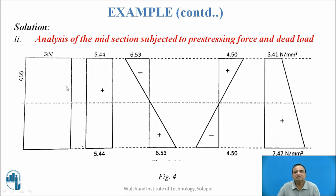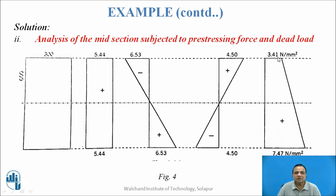The stress diagram for midsection analysis shows: the cross section with P/A constant, then P·E/Z giving tension at top and compression at bottom, and MD/Z giving compression at top and tension at bottom. The algebraic sum of all three gives 3.41 N/mm² at the top and 7.47 N/mm² at the bottom.